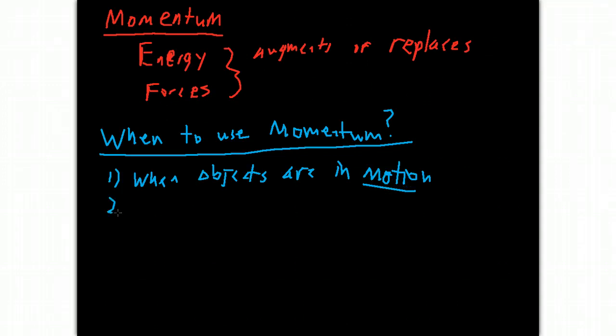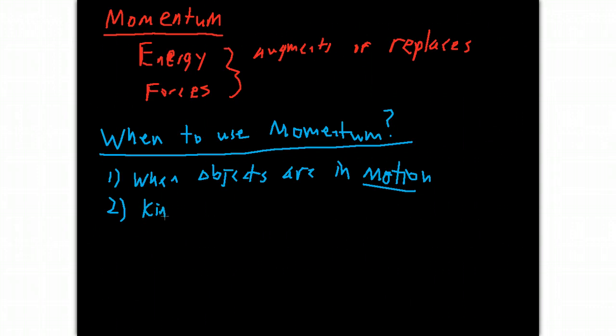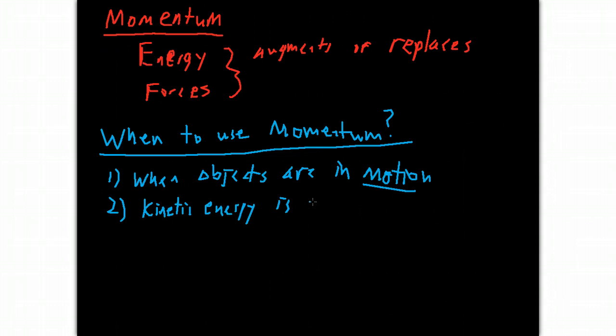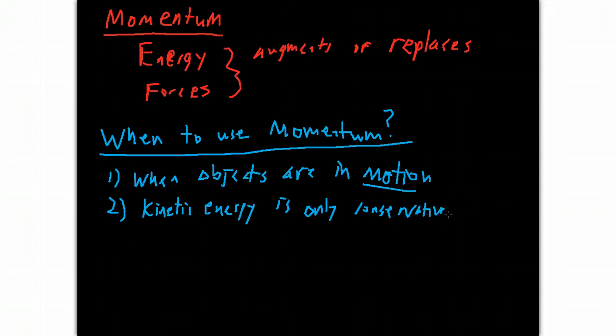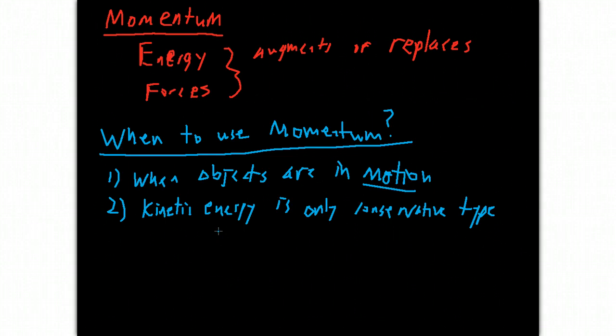Another thing though is that if there are other energy types, then it's not normally a good idea. So when kinetic energy is really the only conservative type. And what I mean is that it normally doesn't pay to use momentum as your primary tool if there are things like gravitational potential energy or spring potential energy.